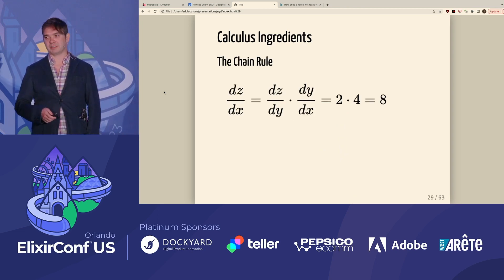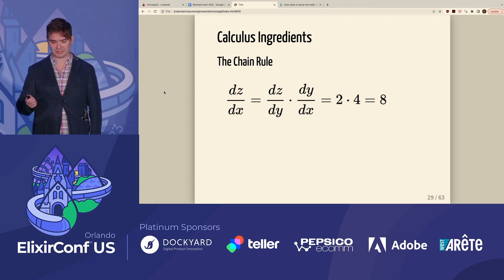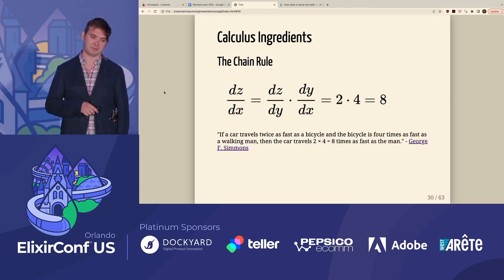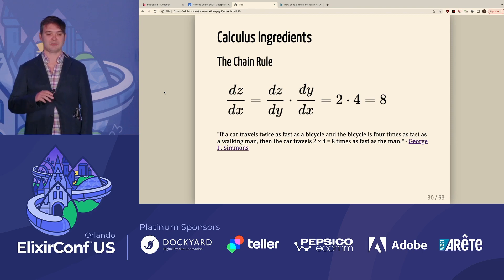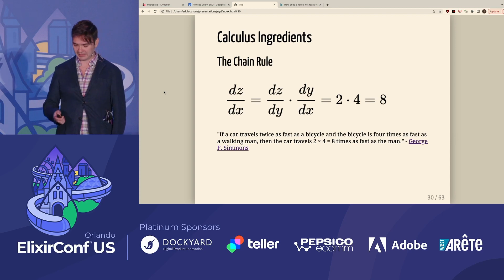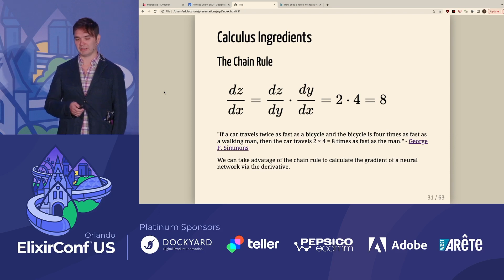The second important thing we need to use in order to calculate SGD is the chain rule. The chain rule gives us relationships between different objects through an intermediate value. A good intuitive example: if a car travels twice as fast as a bicycle, and a bicycle is four times as fast as a walking man, then the car travels two times four, or eight times, as fast as the man. We will take advantage of this rule in order to calculate through back propagation the gradients in a neural network.